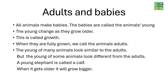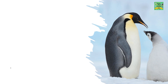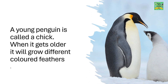Adults and babies: all animals make babies. The babies are called the animal's young. The young change as they grow — this is called growth. When they are fully grown, we call the animals adults. The young of many animals look similar to the adults, but the young of some animals look different. A young elephant is called a calf; when it gets older it will grow bigger. A young penguin is called a chick; when it gets older it will grow different colored feathers.